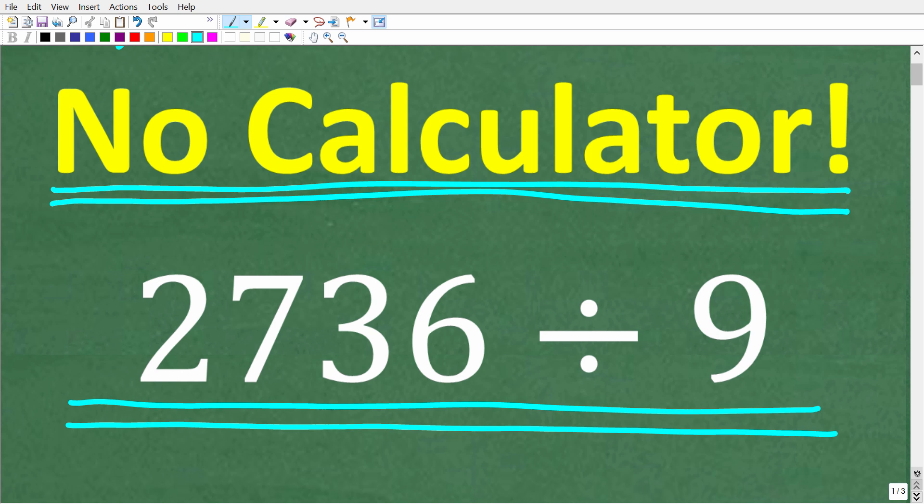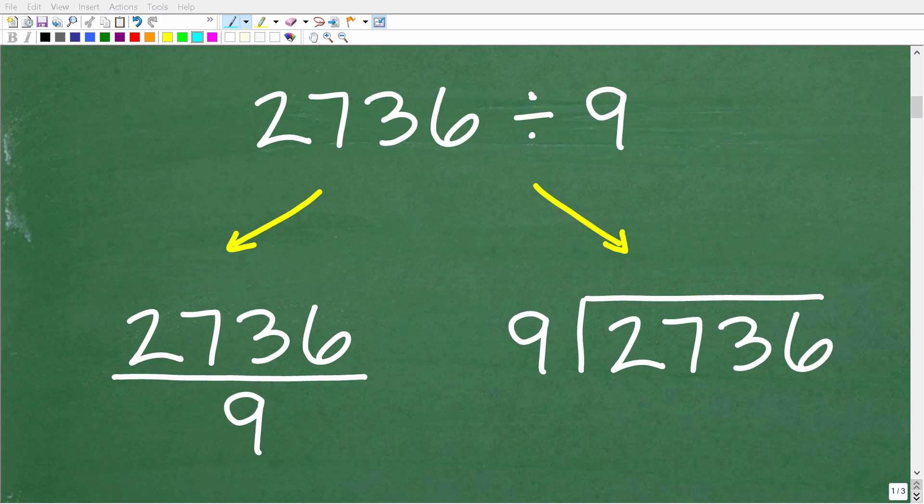All right, so once again, we are talking about basic arithmetic and division. We have 2736 and we're going to divide it by 9. Now, if you're going to do this problem, don't forget to include a remainder if you get one.